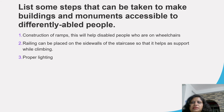List the sub-steps that can be taken to make buildings and mountains accessible to differently-abled people. Construction of ramps will help disabled people who are in wheelchairs. Railings can be placed on the side walls of staircases and hills to support climbing. Proper lighting should also be provided.